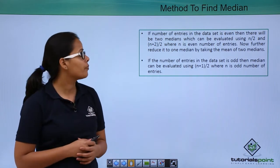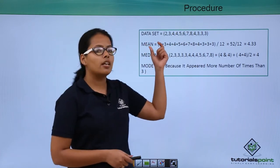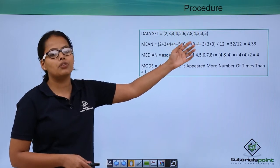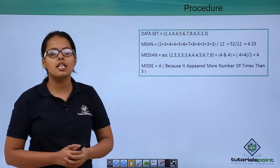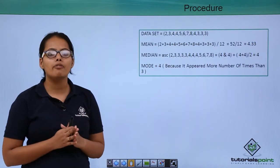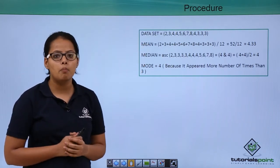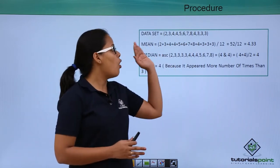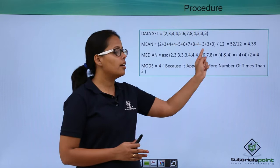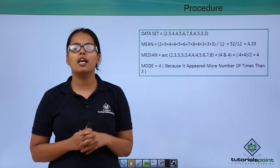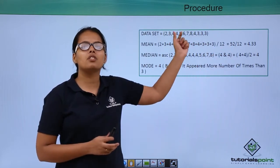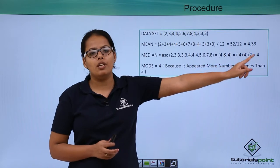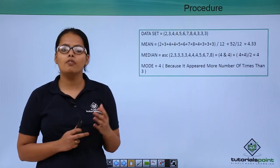Now let's take an example of how to calculate mean, median and mode. The dataset given is 3, 4, 4, 5, 6, 7, 8, 4, 3, 3, 3. To calculate mean, sum all the entries as shown, then divide by the total number of entries which is 12. Dividing by 12 you get 4.33, so this will be the mean of this dataset.